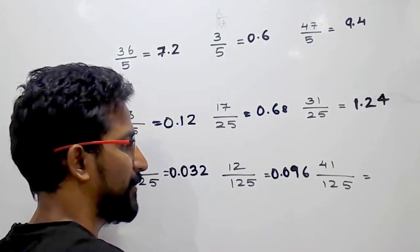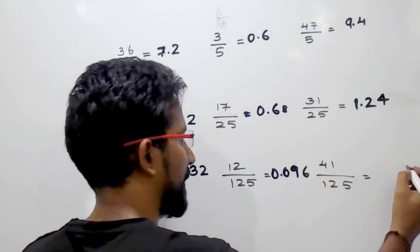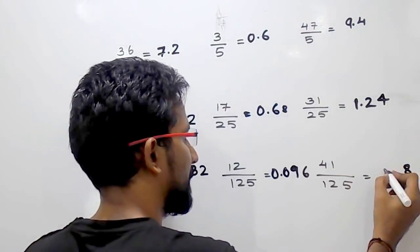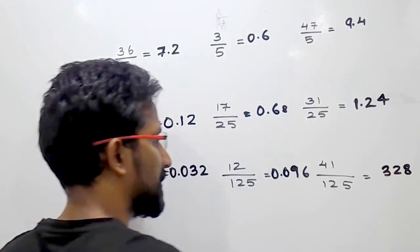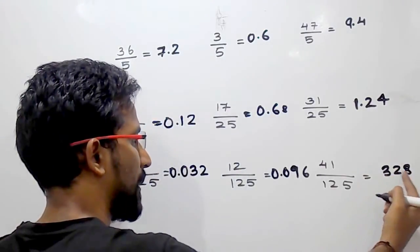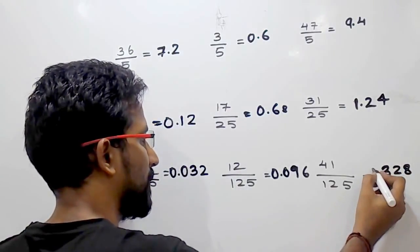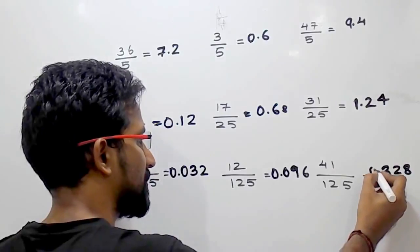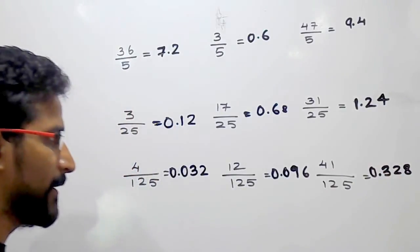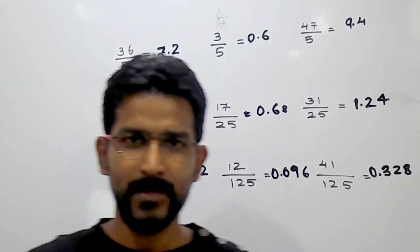The next example is 41 divided by 125: multiply by 8, so 41 times 8 is 328. After three numbers from the right, the point goes here — 0.328.